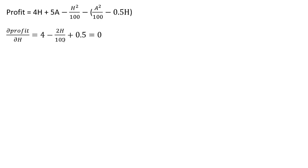Setting that result equal to 0, let's solve this for H. 4 plus 0.5 is 4.5, and 2 divided by 100 leaves us 50 here. Moving this over to the right-hand side, we have this result. Multiplying through by 50, the efficient level of honey production is 225.